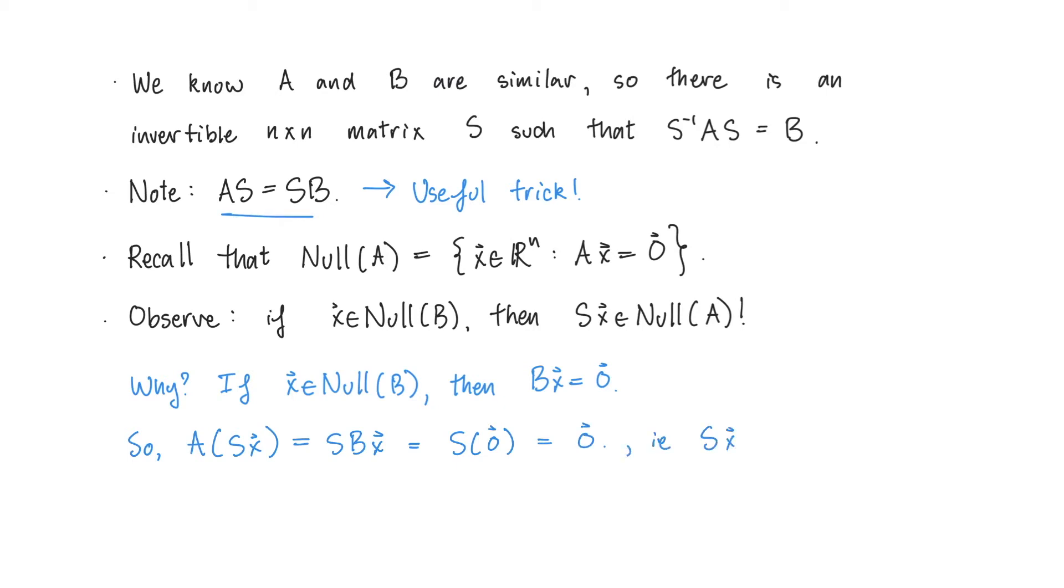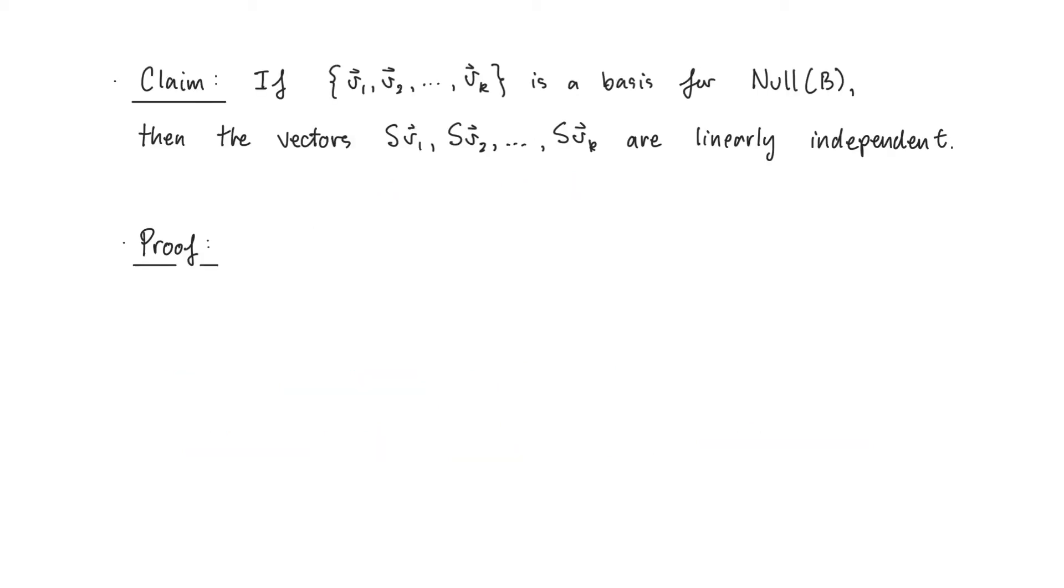So S times X is in the null space of A. In other words, we've found a connection between the null space of A and the null space of B. This is looking pretty good, but I think we can do better. Let's look at the following claim.